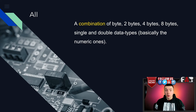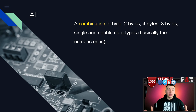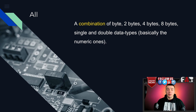Last but not least, we have the all scan. The all scan basically searches for every numerical value in the game. Now of course, this is the largest scan and most time consuming, but you can use it if you cannot find a value in the game or you're not sure what the data type is.